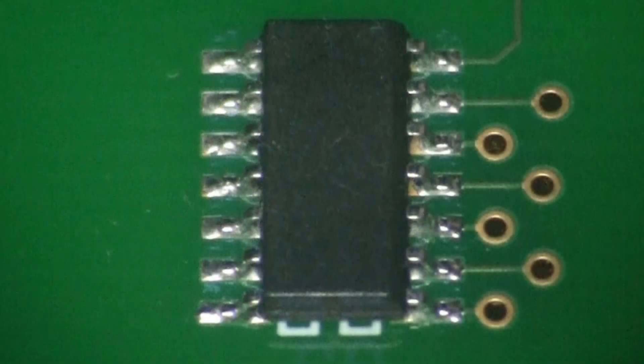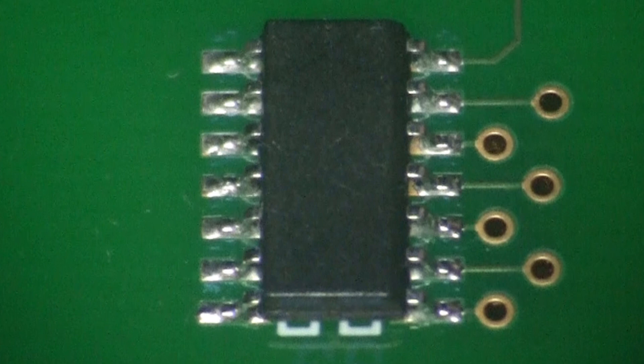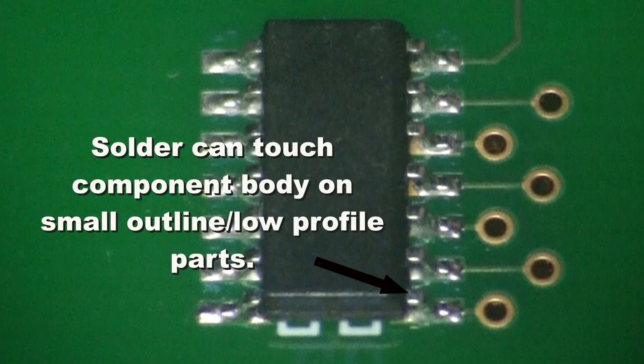At minimum, the heel fillet must be equal to the solder thickness under the lead plus the full thickness of the lead foot. In the case of a small profile SOIC family component, the solder can climb the lead all the way to the knee of the component and it can touch the component body.